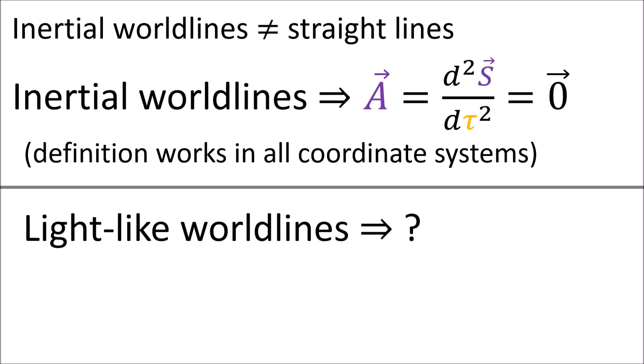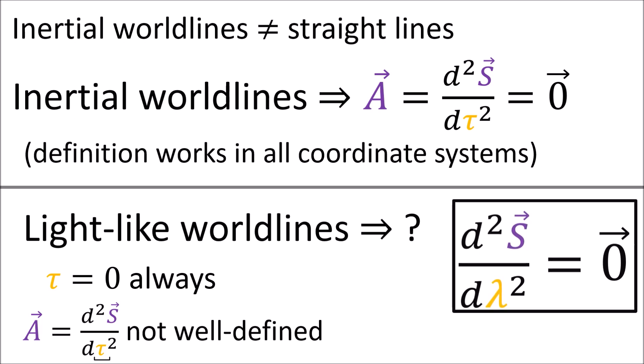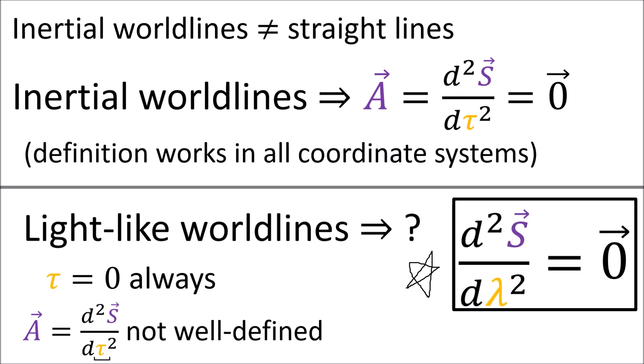But what about the world lines of beams of light? The proper time tau for light-like world lines is always 0, so light-like world lines don't have a well-defined four-acceleration vector, because four-acceleration involves derivatives with respect to proper time tau. Instead, we can define light-like world lines using a slightly modified definition: instead of saying the second derivative of four-position with respect to tau is 0, we'll say that the second derivative of four-position with respect to a generic path parameter lambda is equal to 0.